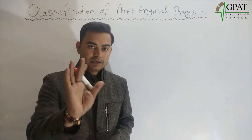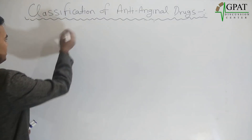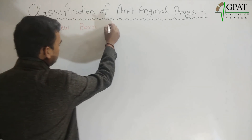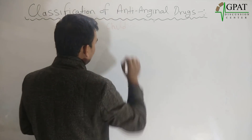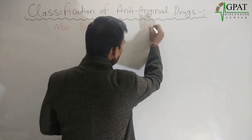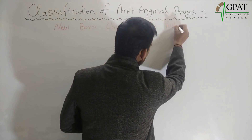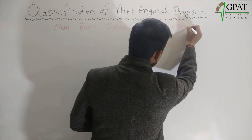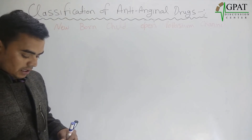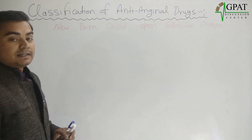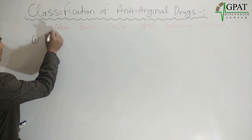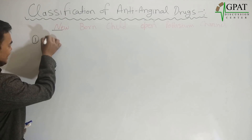Simply, you will remember first: New-born child open potassium channel. The anti-anginal drugs are classified into five subclasses. The first class, from the 'N' in New, is nitrate.